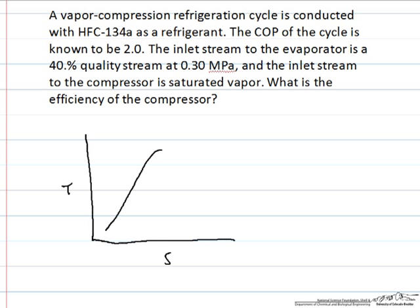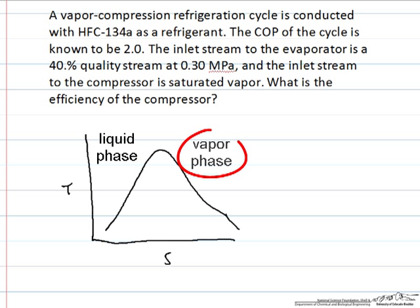We need to draw a rough phase envelope for this diagram, where the liquid phase is the lower entropy phase on the left-hand side of the phase diagram, and the vapor phase will be on the right-hand side of the diagram.